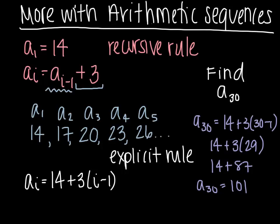Okay guys. So anytime you're given a recursive rule and you're asked for a value way later in the sequence, you can just find the explicit rule and then just replace. Okay, good luck everyone.